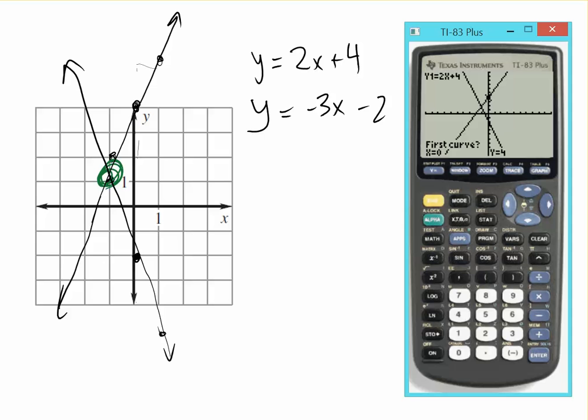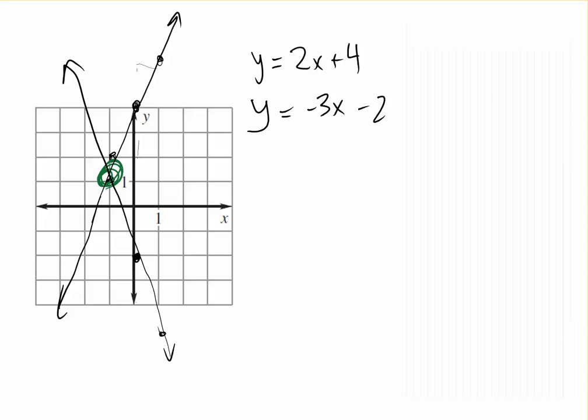And it's going to say first curve, and what that means is what's your first line? We're going to hit OK. This is my first line. It's OK. Second one, yep, it's on the second line. That's OK. And the intersection, it's going to tell us is negative 1.2 and 1.6. So the solution is negative 1.2, 1.6. That's this point.